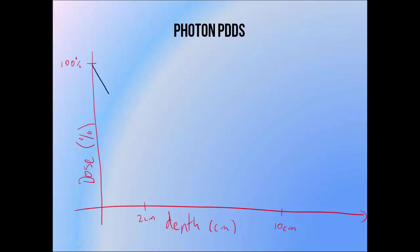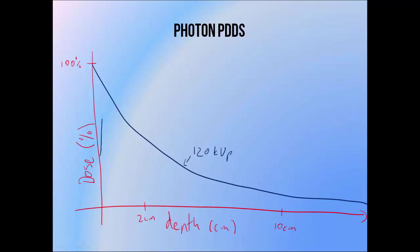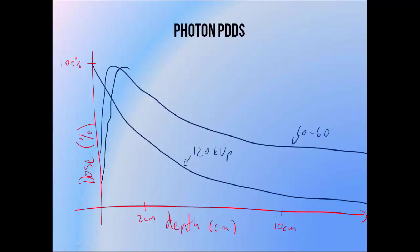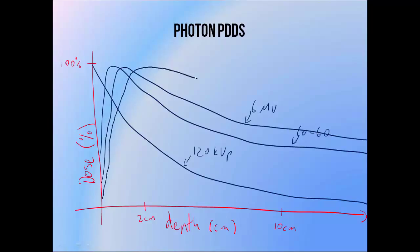Low energy beams in the kilovoltage range tend to deposit a high dose near the surface, which falls off very rapidly with depth, as we see here with a 120 kVp beam. But as beam energy increases into the megavoltage range, the dose at the surface drops, and we see a depth of maximum dose emerging beneath the surface, which gets steadily deeper with beam energy. We also see that dose falls off less rapidly with depth at higher beam energies, with the slowest falloff seen for the 18 MV beam.